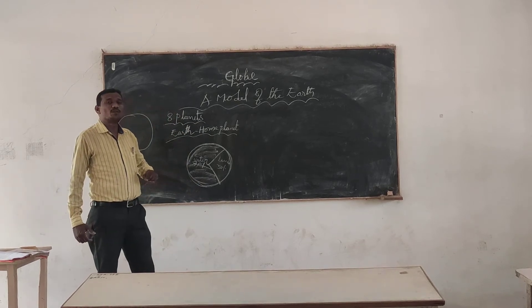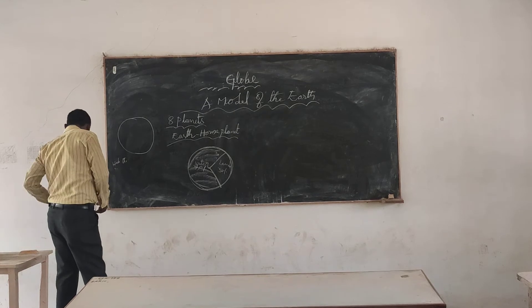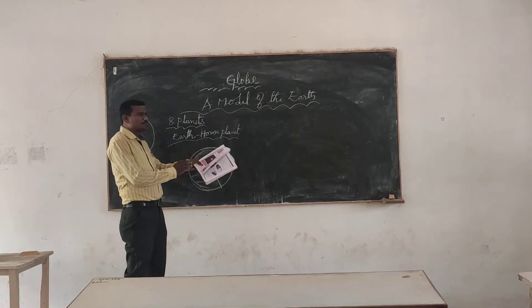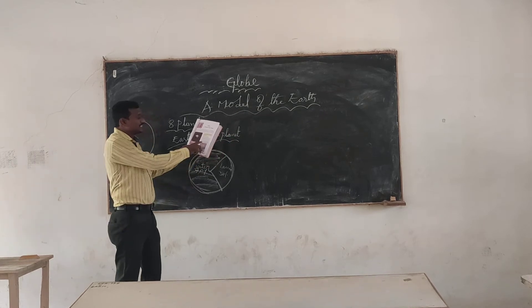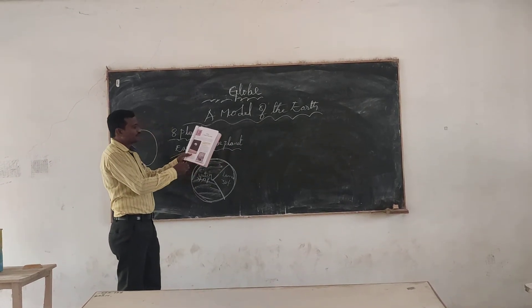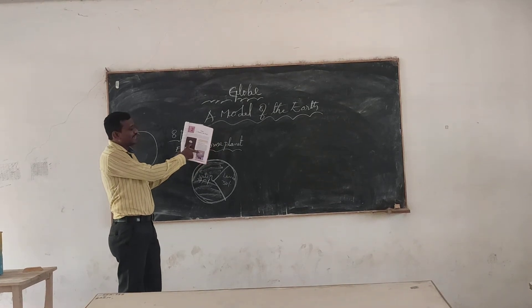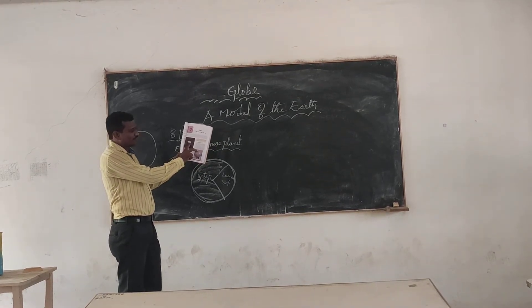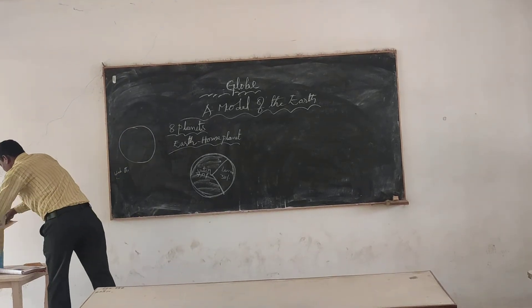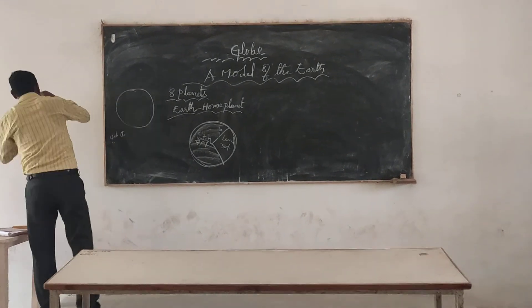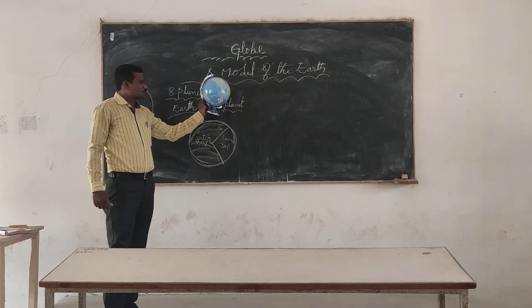What is a globe? A globe is a small model of the Earth. You can see in the textbook here, children — a picture is given of one such type. From this picture you can see the shape of the Earth looks like the moon. Bring some globes to the classroom.